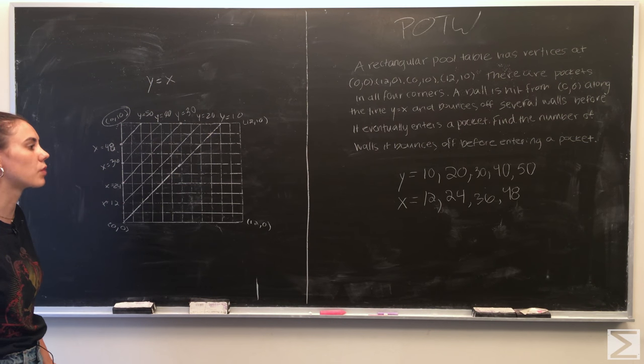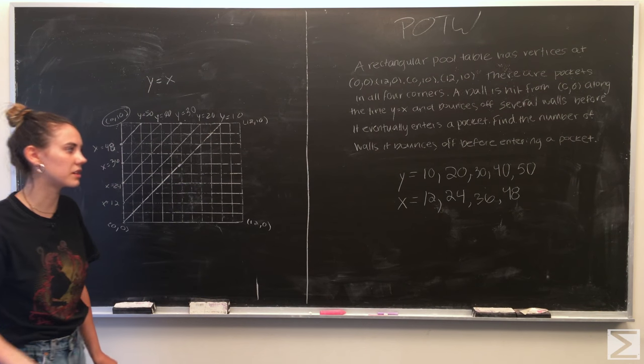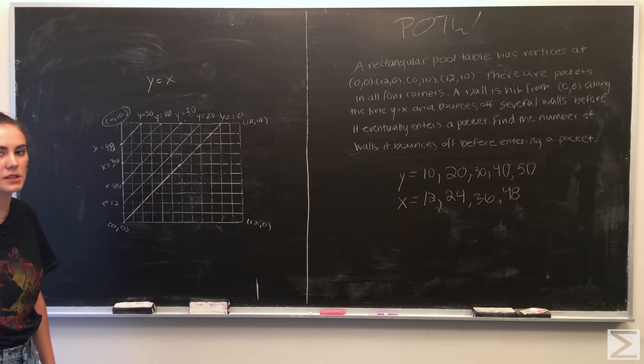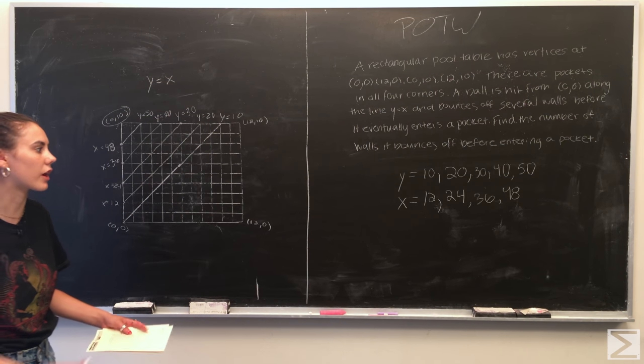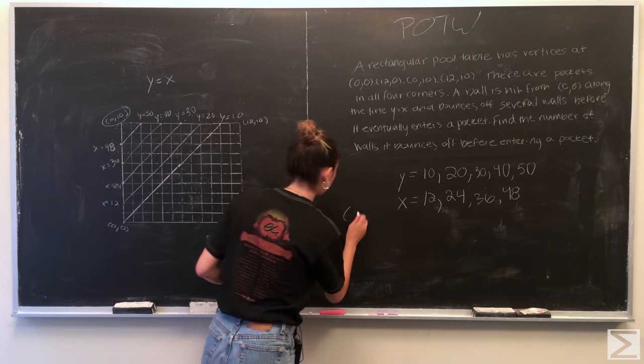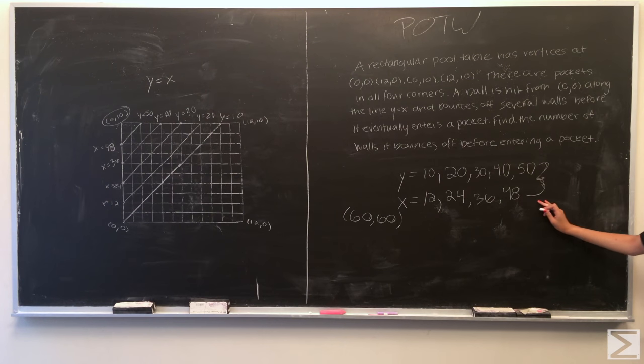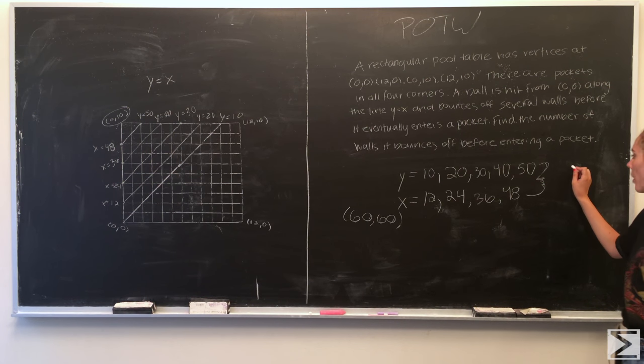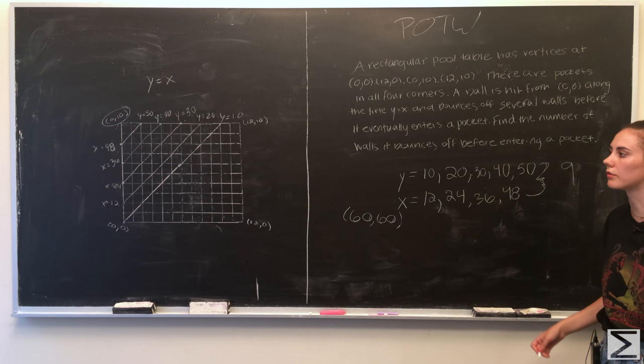So from there, we can actually use the points that we've kept track of where the ball hits the different lines y and x, and we can count up how many different walls it's hit until it entered that last and final corner at (60,60). So counting up all these different points, we have five different y lines that it has hit and four different x lines. So in all, the ball hit nine different walls until it actually entered one of the corner pockets.